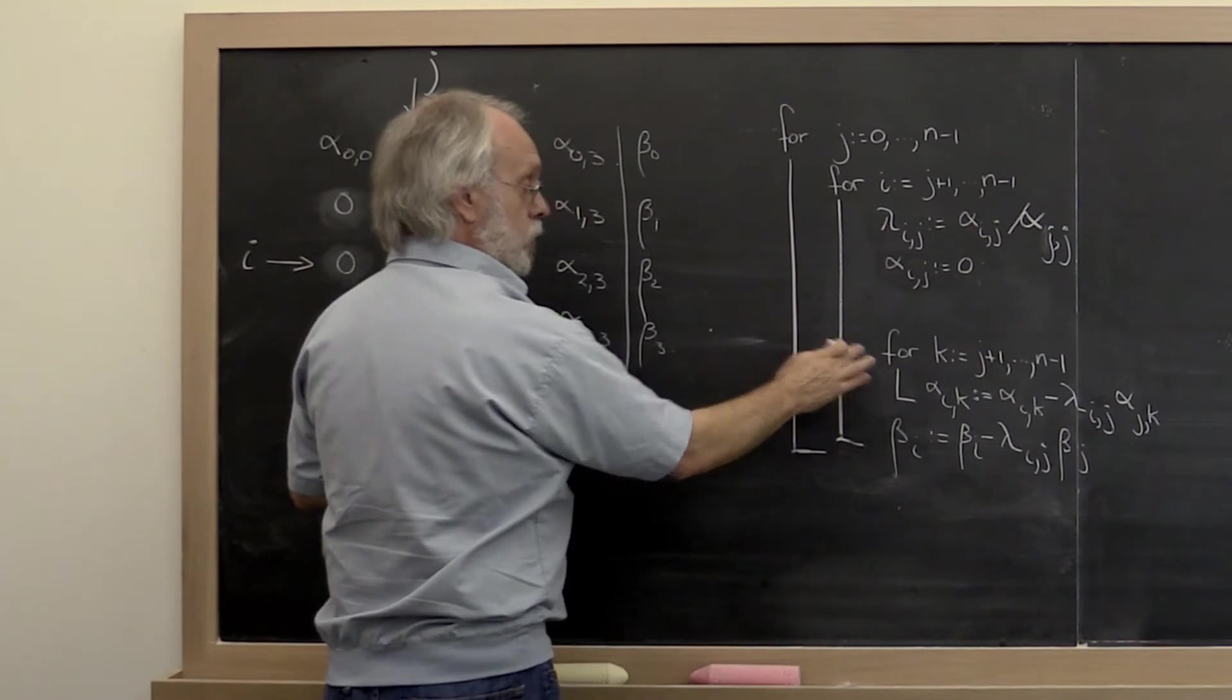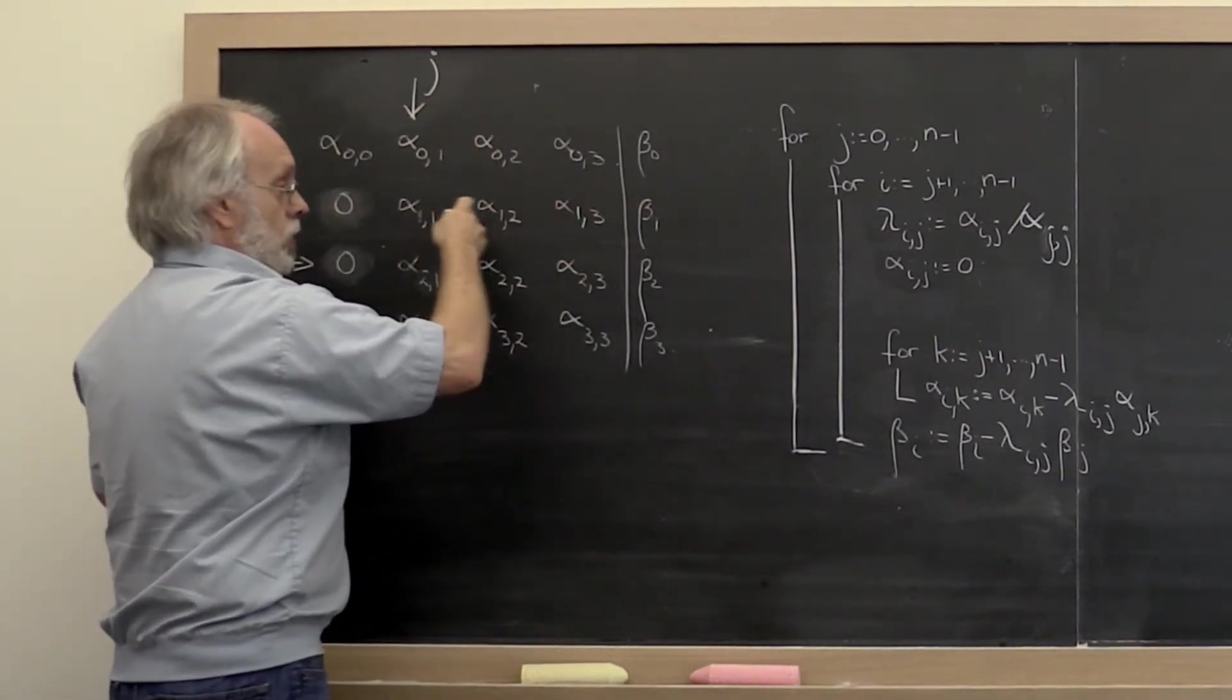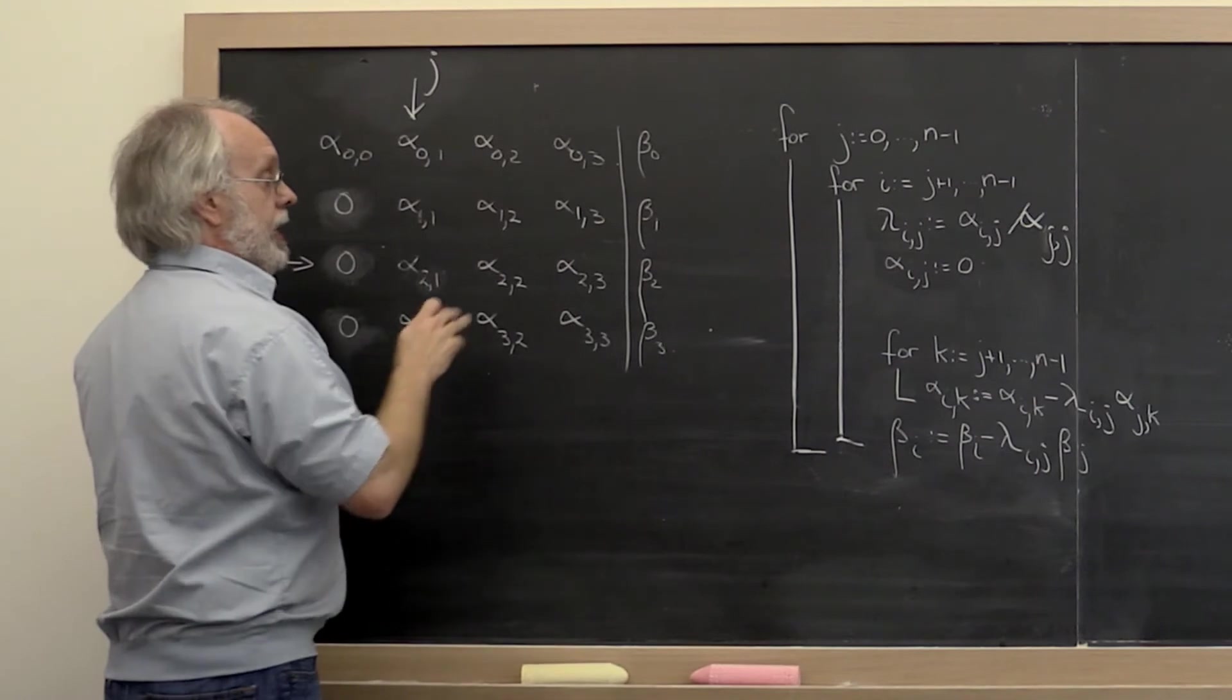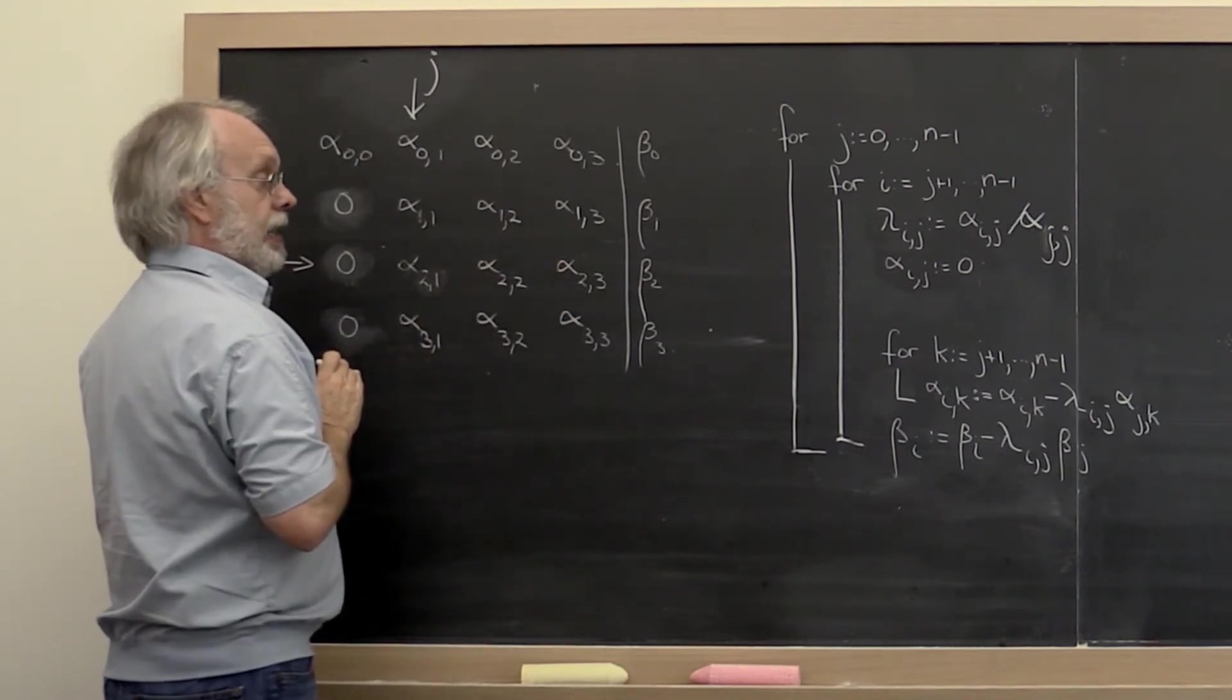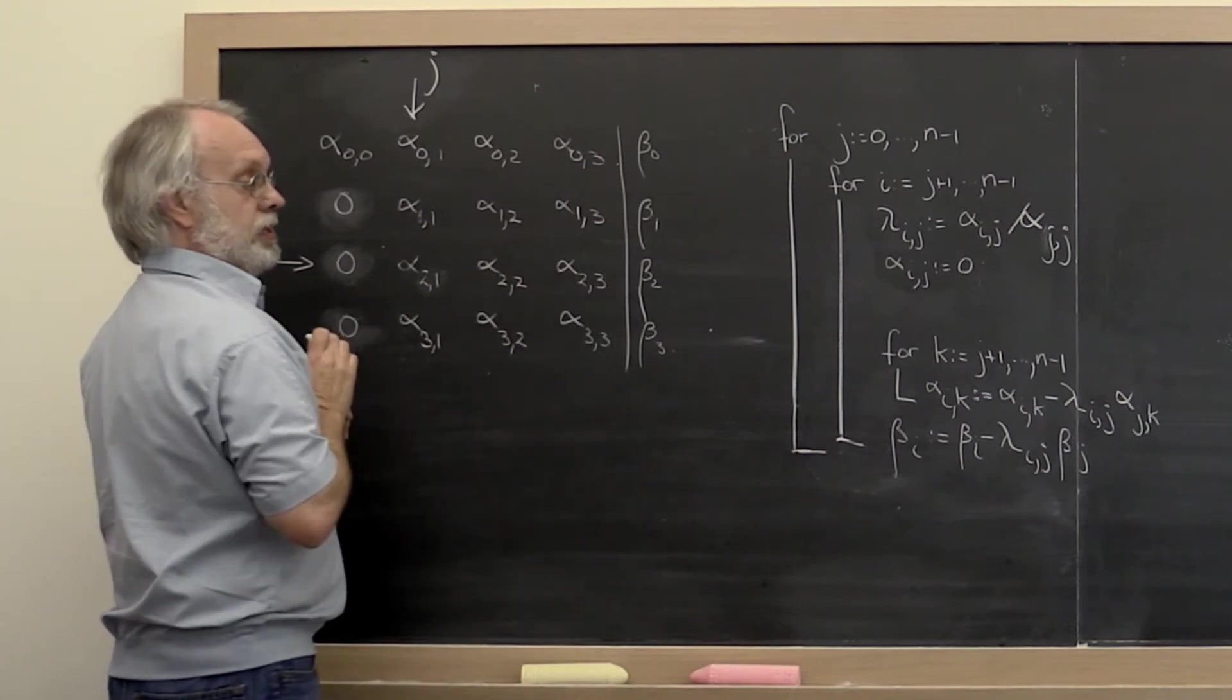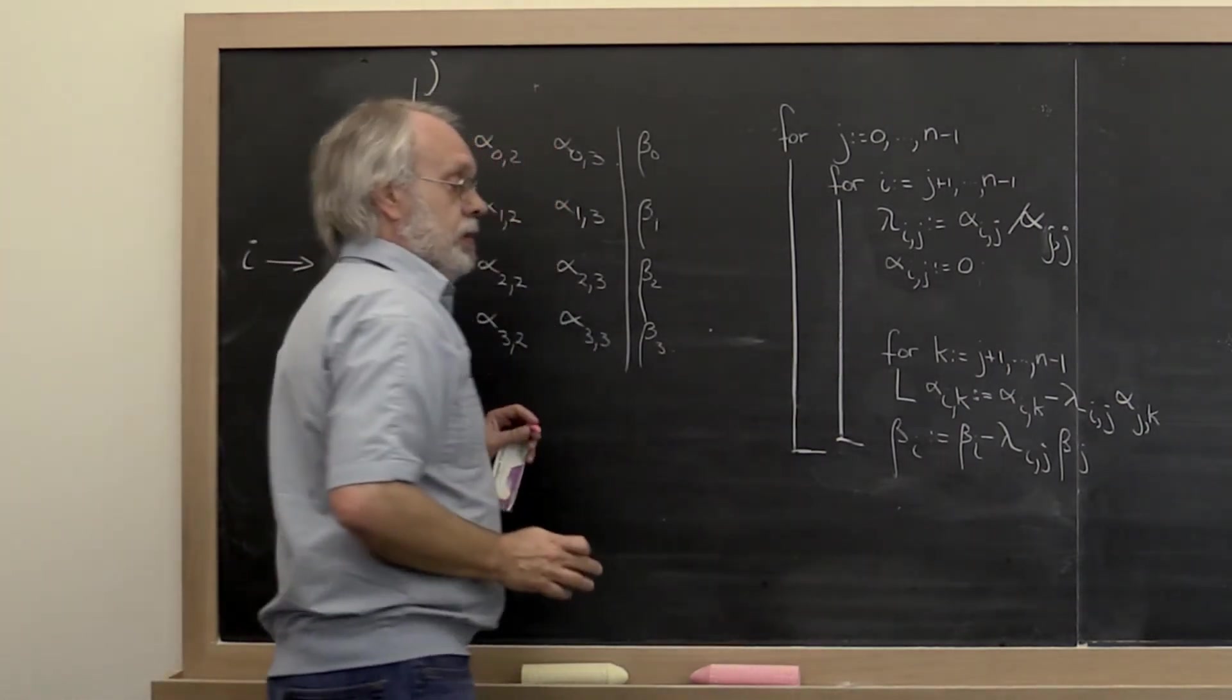Then what do we need to do? We need to index over all elements in the rest of the rows, of these two rows, and update the element in the current ith row. We take the multiplier, multiply it times that element, subtract it off of that element, multiply it times that element, subtract it off of that element, and so forth. That's what this loop does right here.